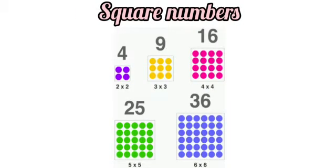First, I will explain about square numbers. See the arrangements of dots in the following figures. The dots are arranged in the form of a square. In the first figure, two dots in each row and there are two rows, so 2 multiplied by 2 is equal to 4 dots. In the second figure, three dots in each row and there are three rows, so 3 multiplied by 3 is equal to 9 dots.